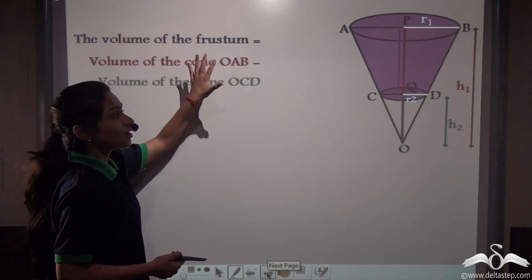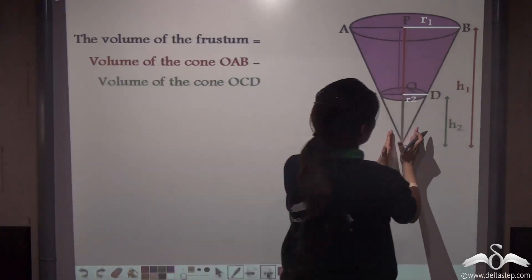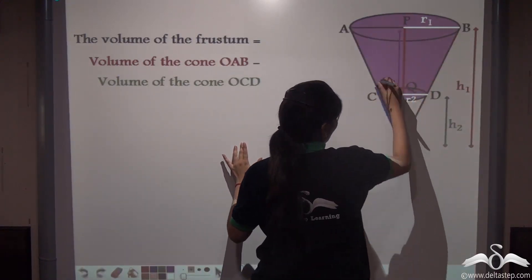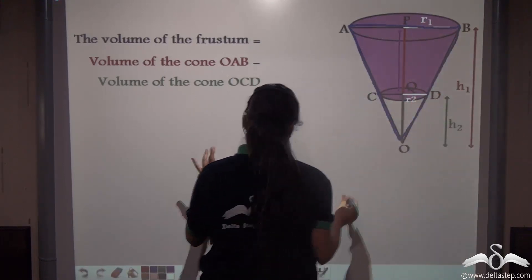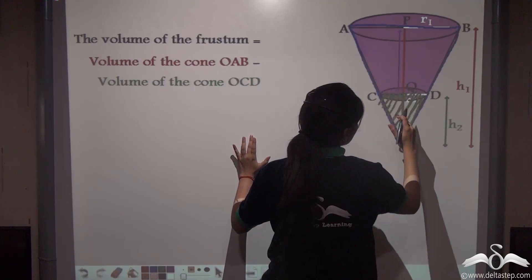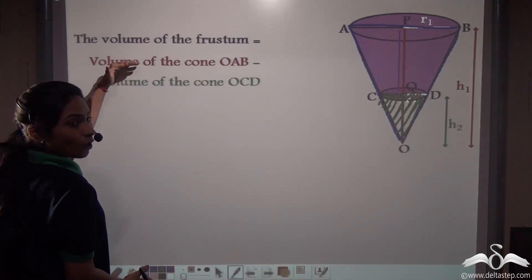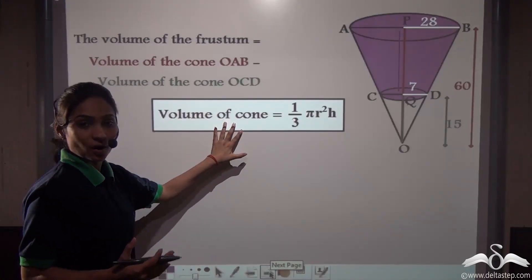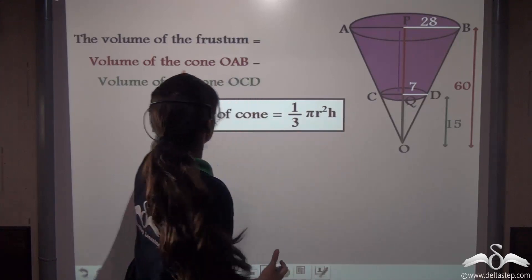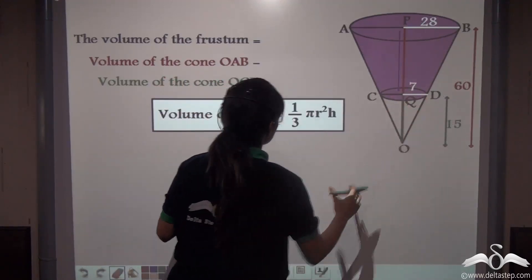Now let's find the volume of the frustum. The volume of the frustum equals the volume of the bigger cone OAB minus the volume of the smaller cone OCD. The formula for the volume of a cone is (1/3)πR²H, where R is the radius and H is the height.